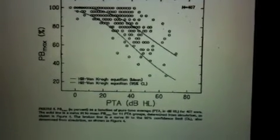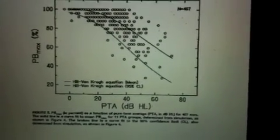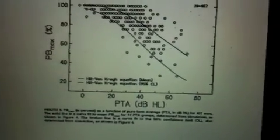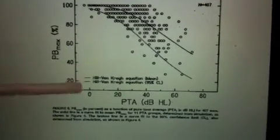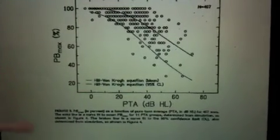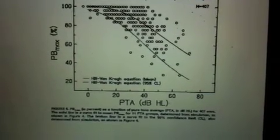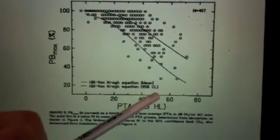But it does at least allow us to consider how overall degree of hearing loss for particular configurations agrees with the speech recognition scores. So how we read this figure is, let's say somebody had a flat, moderate amount of hearing loss. So let's say their PTA equaled 50 dB HL.